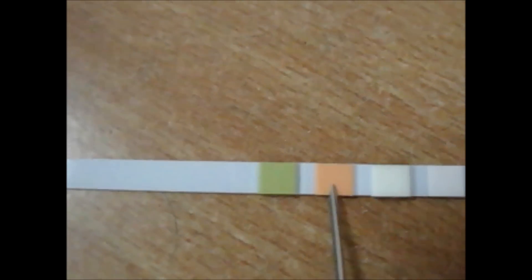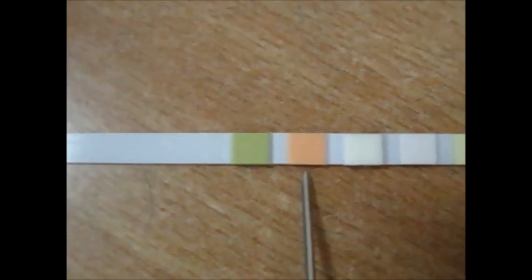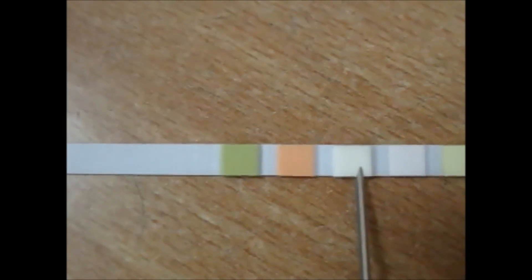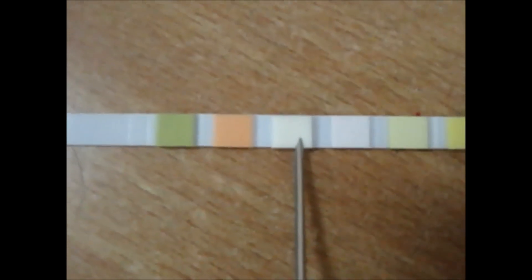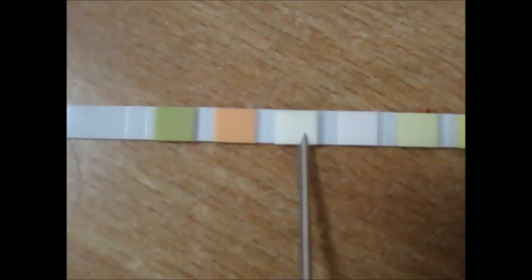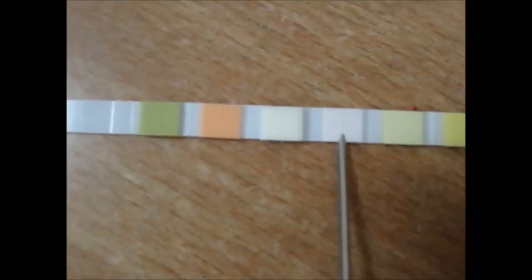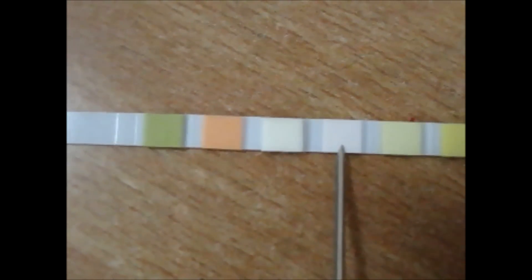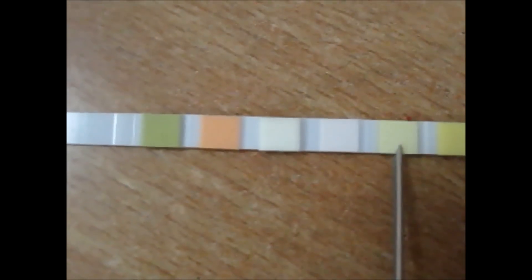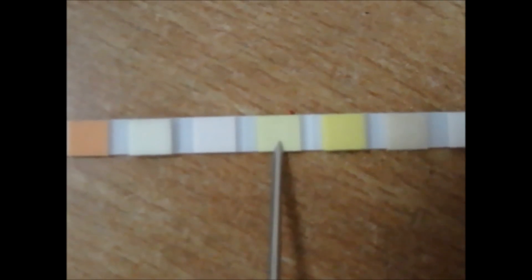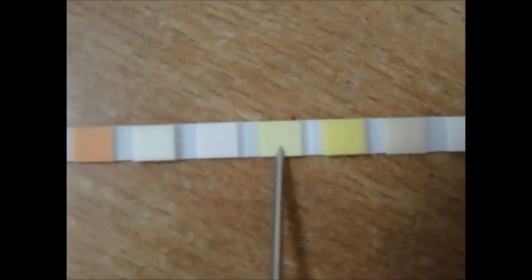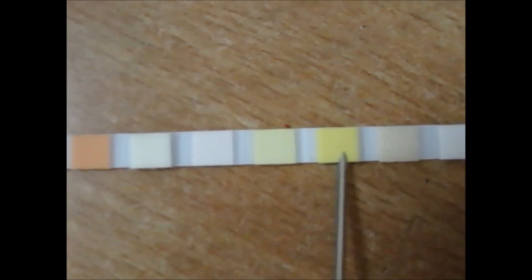This one tells about the pH of the urine. The next to it tells you about the leukocytes in your urine. The next to it tells about the presence of nitrites in your urine.